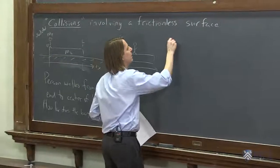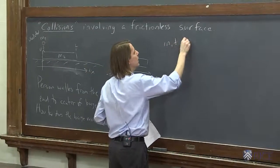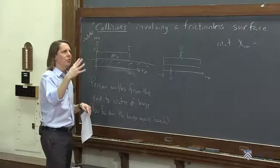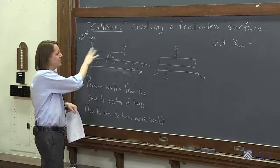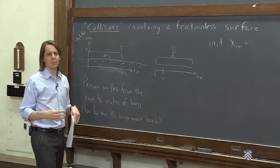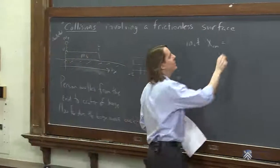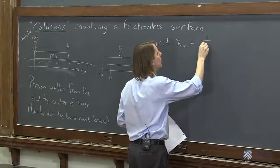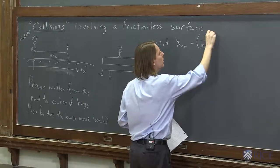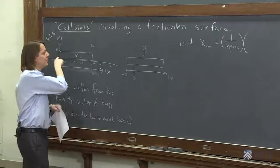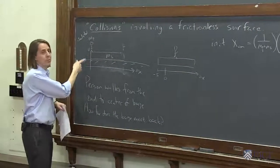All right. So let's look at the initial x center of mass. So the center of mass is 1 over the total mass times the position of each mass times where it is, so 1 over mp plus mb, times my position times my mass, but I'm at 0, so that's nice. So that's m of the person times 0,